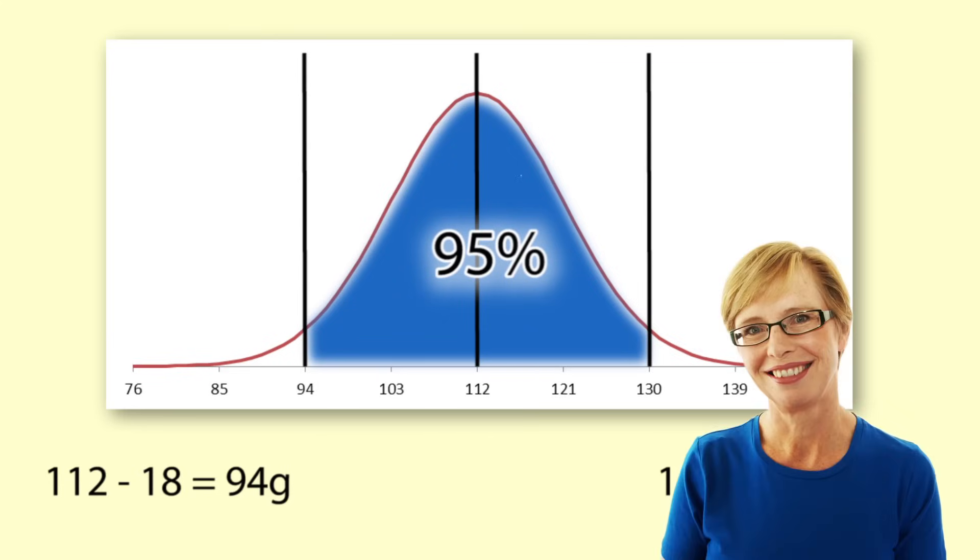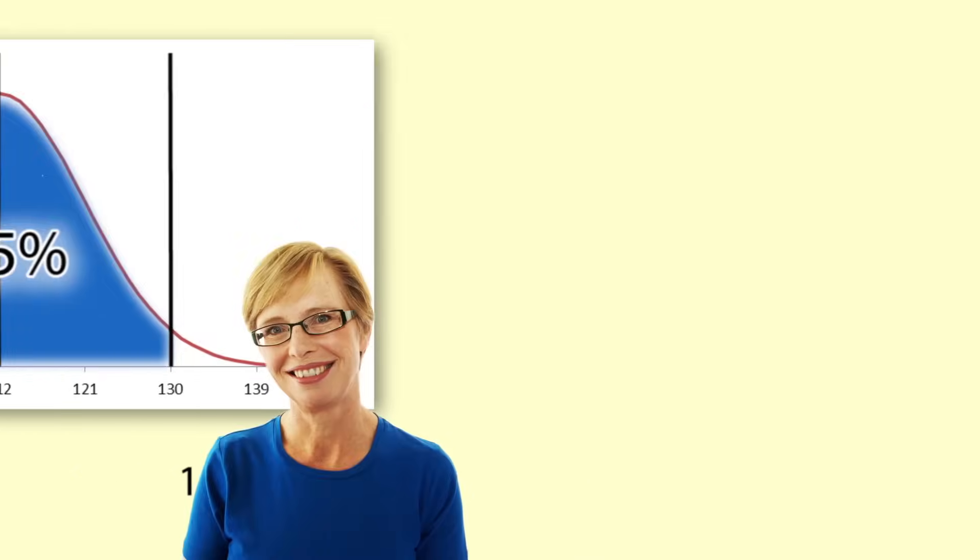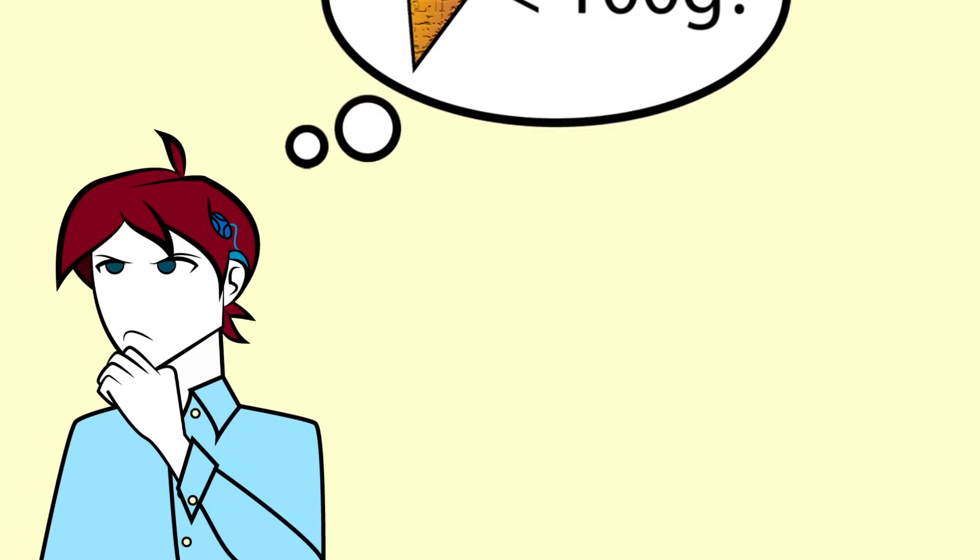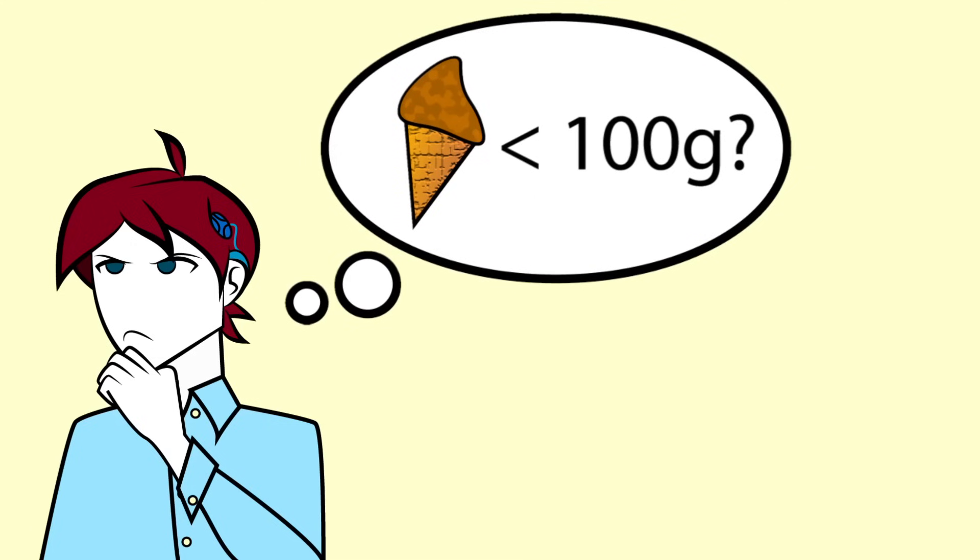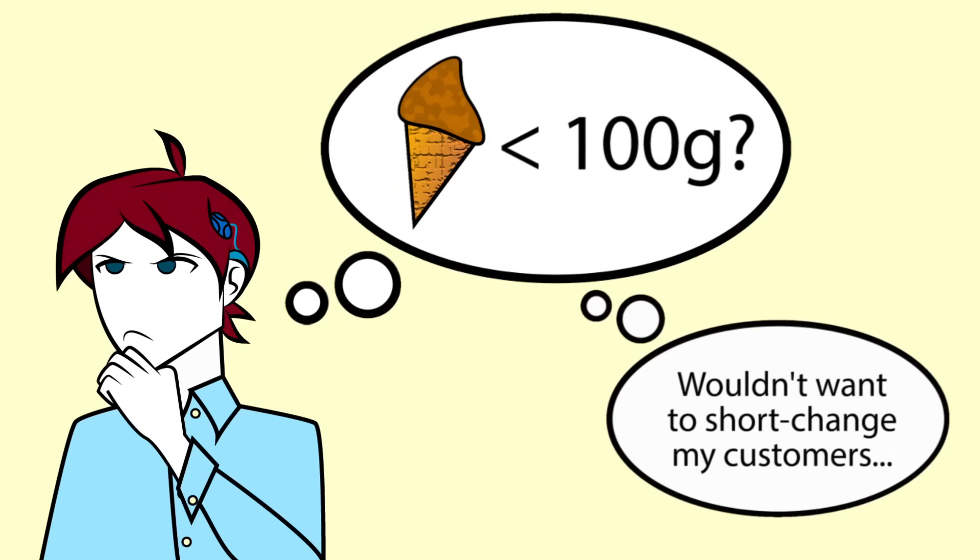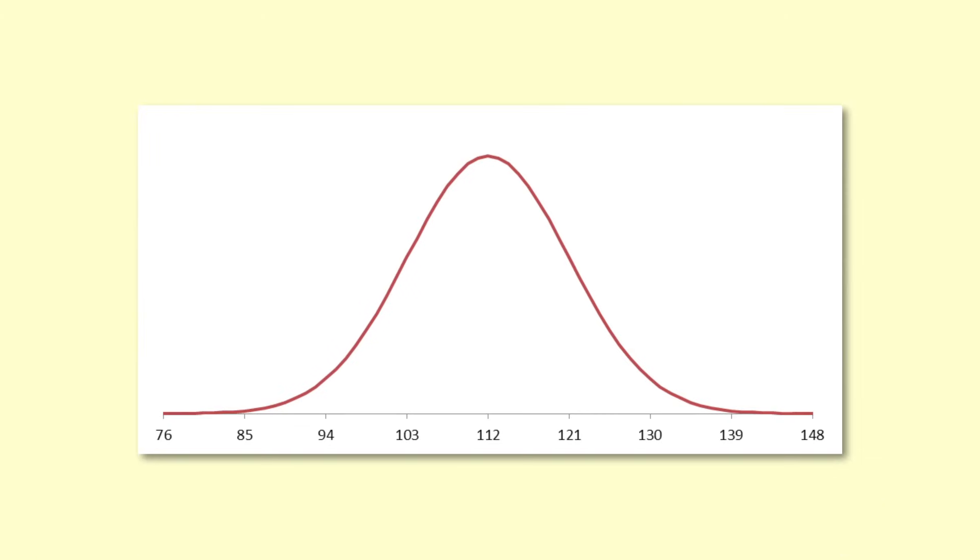We can find out the probabilities of other values too. Luke wants to know what proportion of his ice creams are likely to weigh less than 100 grams. So we want to find the probability that x is less than 100, which is represented by the area under the graph to the left of the line going up from the number 100.